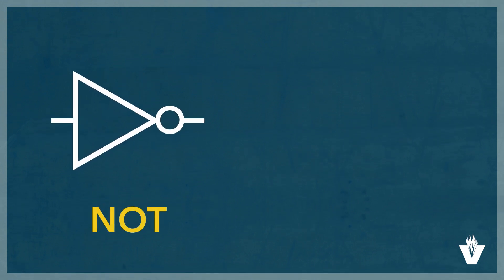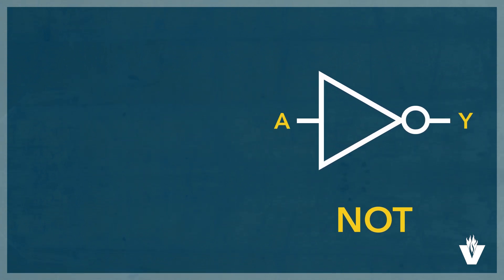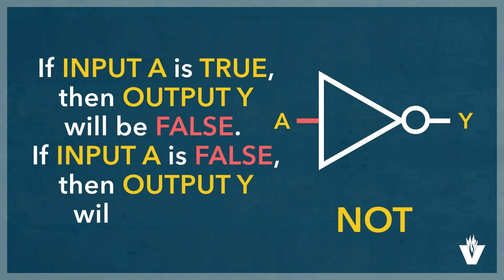The NOT has a very simple job, which is to change the output condition to the opposite of the input condition. In other words, if input A is true, then output Y will be false. If input A is false, then output Y will be true.